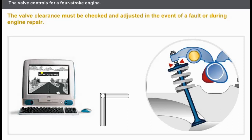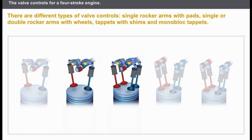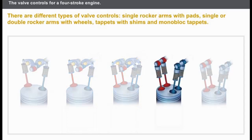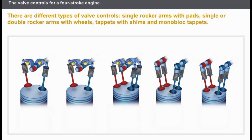Let's look now at the valve controls. There are different types of valve controls: single rocker arms with pads, single or double rocker arms with wheels, a tappet with shims, and monoblock tappets. You can move the mouse cursor over the components to identify them.